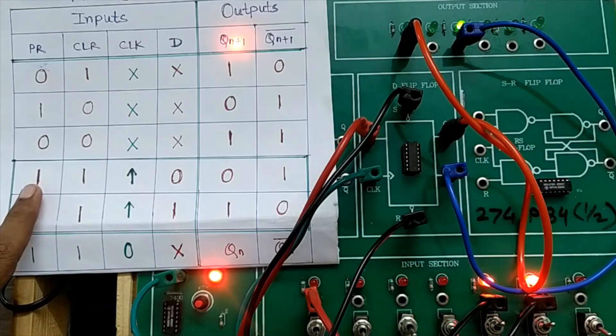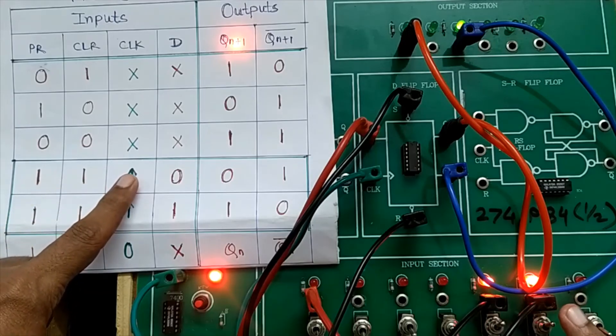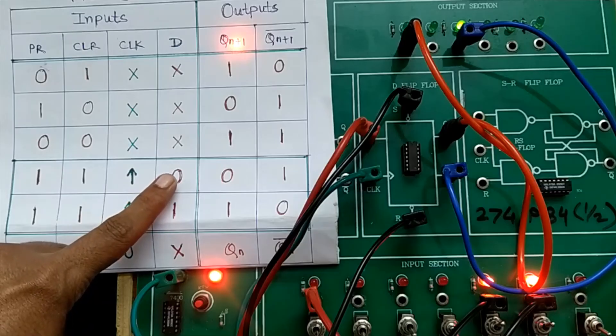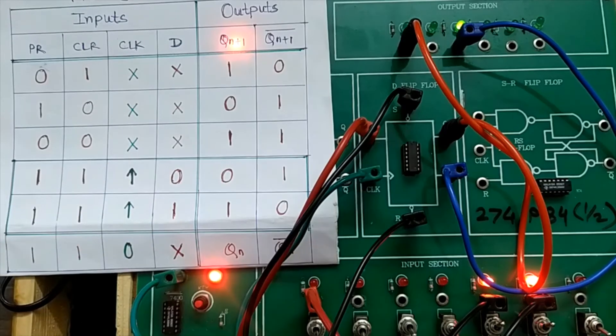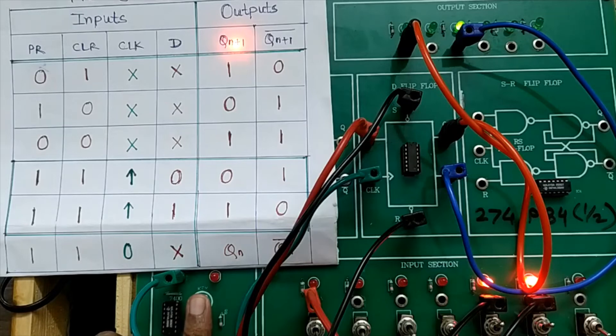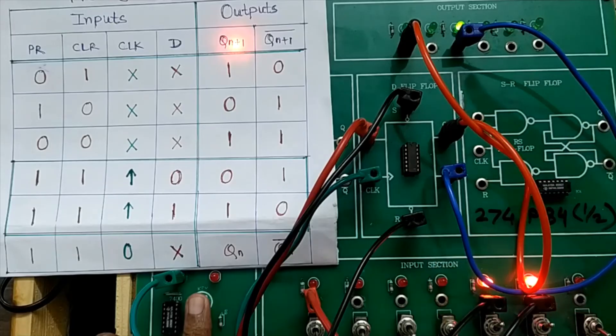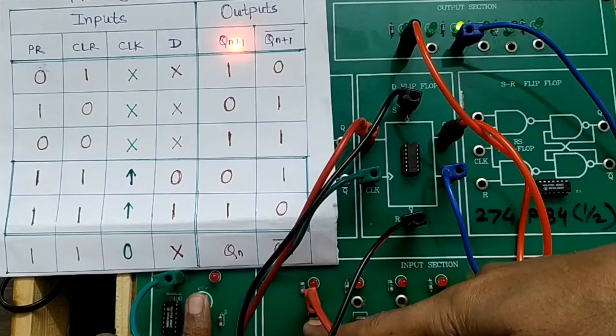Let us go through this condition where preset is one, clear is one, and a positive clock is to be applied where input D is zero. One more thing: by default clock is high. When I press it, clock is low. When I release the clock, that moment the clock goes from low state to high state. That is, it gives positive edge triggering to this D flip-flop, and at that moment input gets reflected into output.